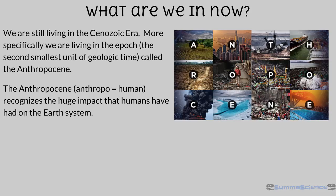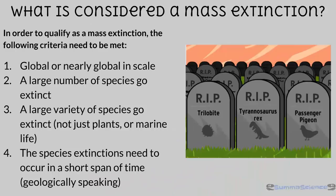There is strong evidence suggesting that a sixth mass extinction may already be underway, influenced by humans. In order to qualify as a mass extinction, the following criteria need to be met: the event needs to be global or nearly global in scale, a large number of species need to go extinct, a large variety of species go extinct — meaning all life is affected — and the species extinctions need to occur in a short span of time, geologically speaking.